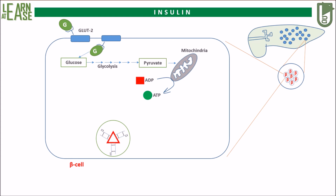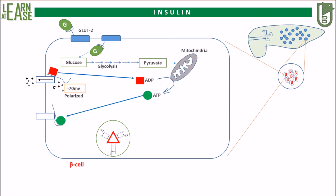Meanwhile, before glucose entered inside the cell during fasting, the potassium channels on the cell membrane were opened due to the high concentration of ADP, and at this stage the cell membrane was polarized. But now, as the concentration of ATP increases as ADP is converted to ATP, the potassium channels close and the membrane gets depolarized.